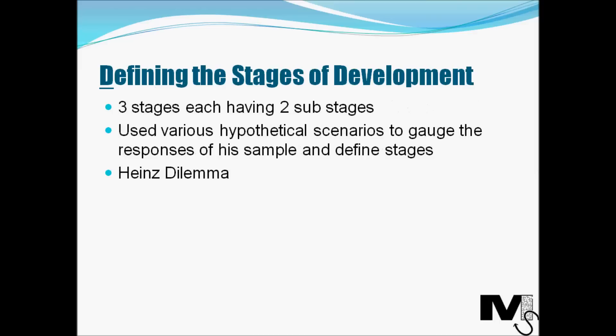How were these stages defined? Just like Piaget, Kohlberg also had a sample section of the population. He selected individuals and performed various tests with them. There are three stages in the Kohlberg Moral Development Theory, and these stages have two sub-stages each, which we're going to look at through the course of this video. Kohlberg used various hypothetical scenarios to gauge the responses of a sample population and thereby define stages.